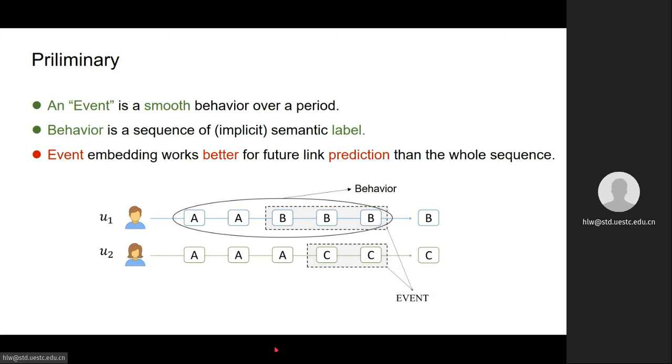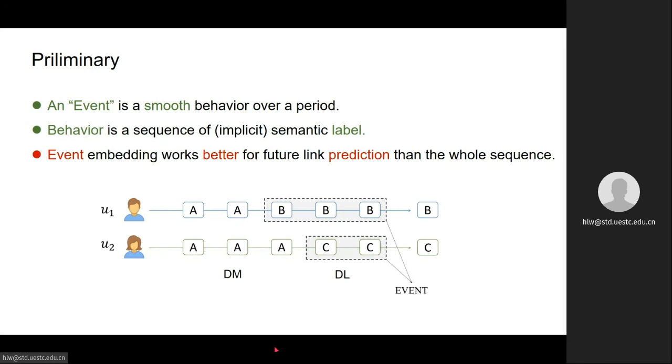We believe that compared to the whole behavior sequence, the most recent smooth part, i.e. the most recent event, are more suitable for both current semantic label prediction and future status prediction.